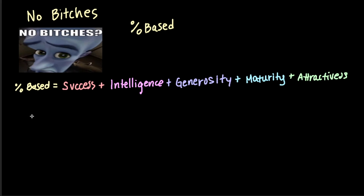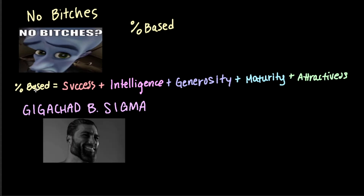Now this equation was actually constructed by a very important person for this unit. His name is Gigachad B Sigma. Gigachad B Sigma actually established this equation to help common folk calculate how many maidens they could have access to.